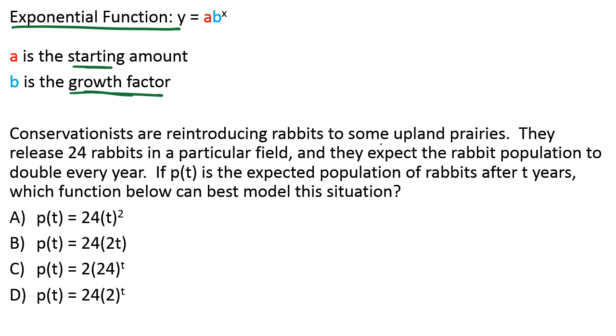They're reintroducing rabbits, they release 24 rabbits in a particular field, and they expect the rabbit population to double every year. I'm going to guess since they started off with 24 rabbits in a particular field, it doesn't say that that was the starting amount or initial amount, but we kind of have to infer that from the situation. I'm going to say that this is A, our starting amount. A is 24.